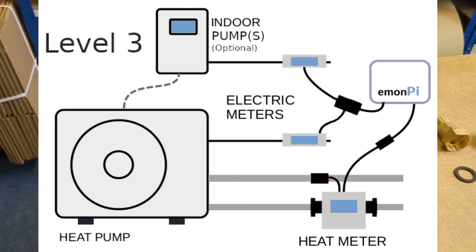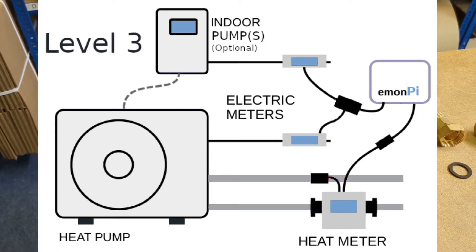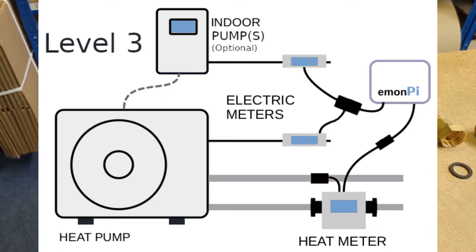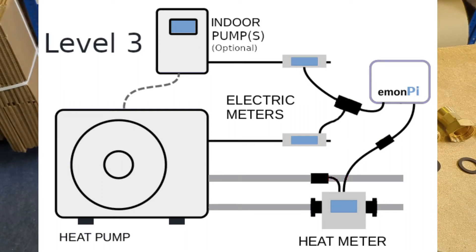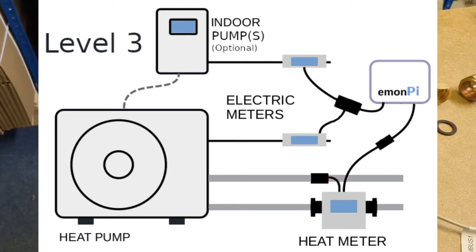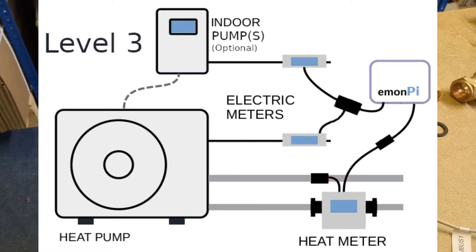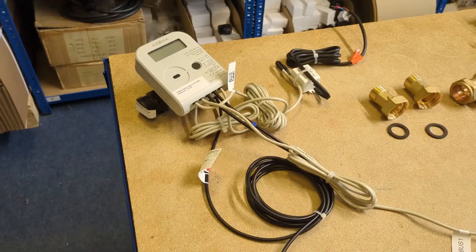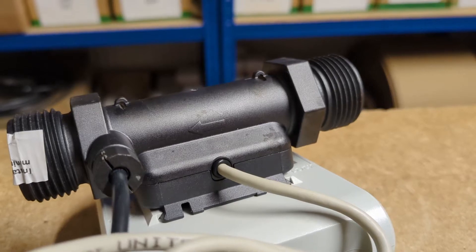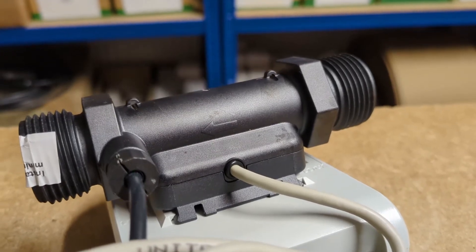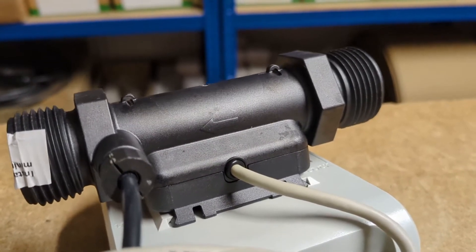By primary pipework, we mean the pipework going to the heat pump before any diverter valves on the flow and after any T's on the return, because we want to measure the full heat output from the heat pump for heating and hot water. Take care to orientate the heat meter following the direction of flow on the body of the meter.